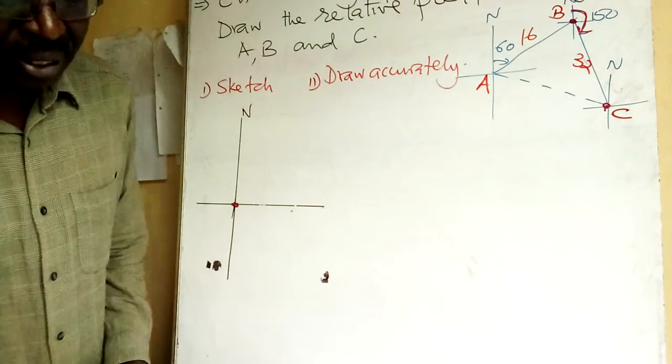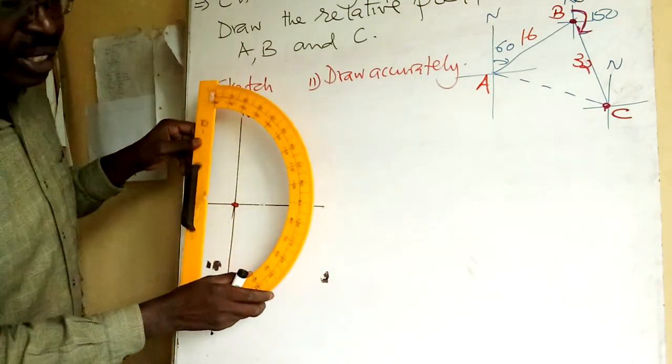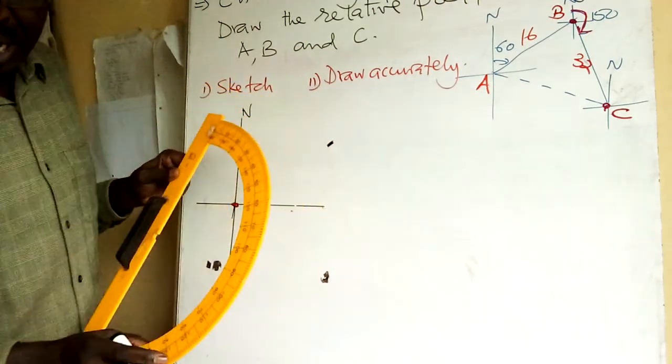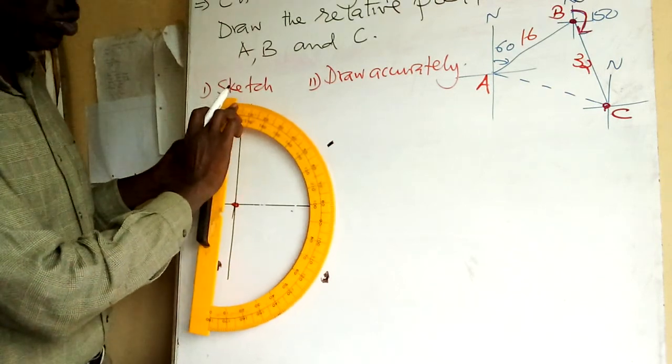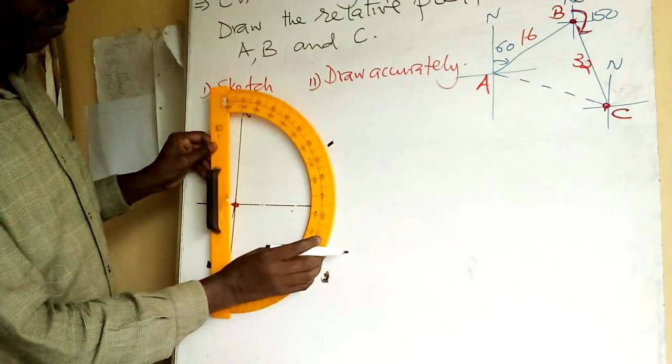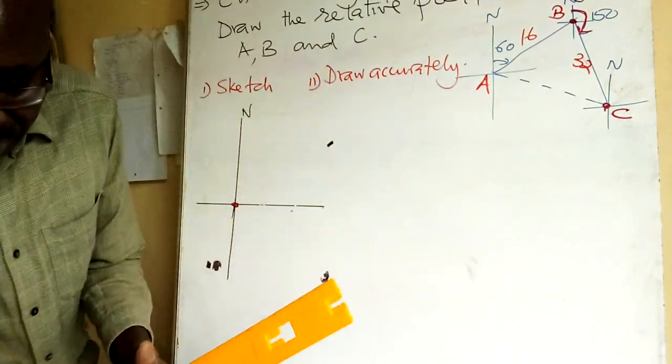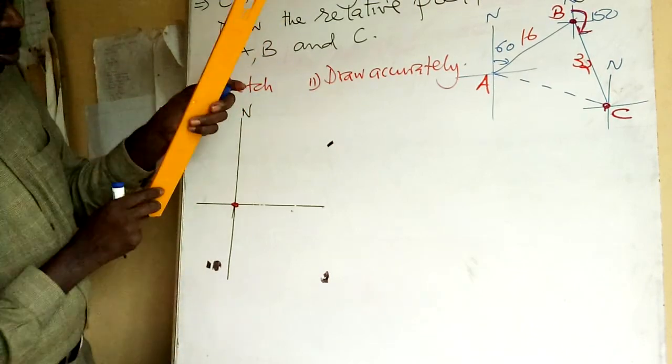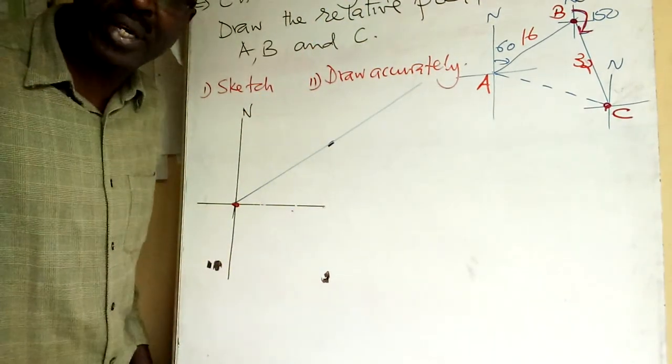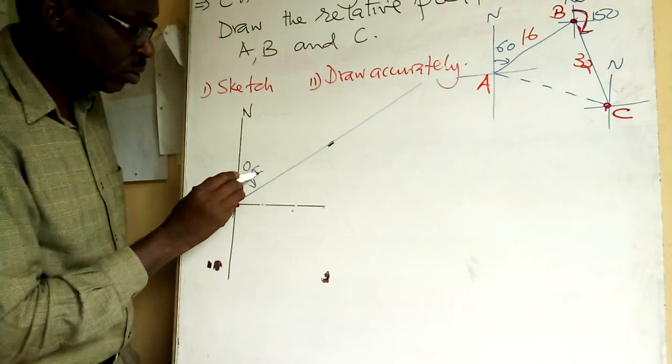Then I have to measure 60 degrees here. So I have to measure 60 degrees here. I have it here. Then I have there. That is the direction of 60. Remember, we measure from north clockwise. So you can see 0, 10, 20, 30, 40, 50, 60. There. After that, what do you do? You take, now I can use blue. I take. There. So I've measured that. This is now 060, done.